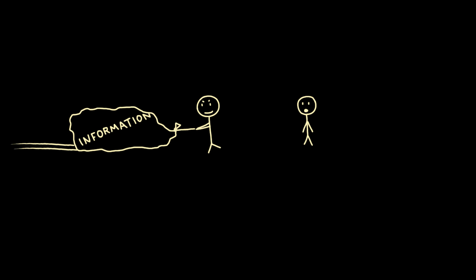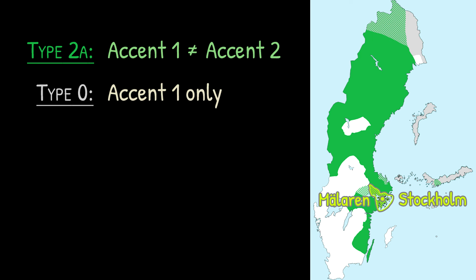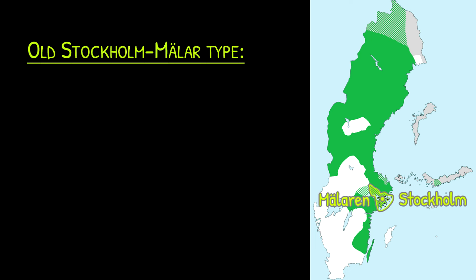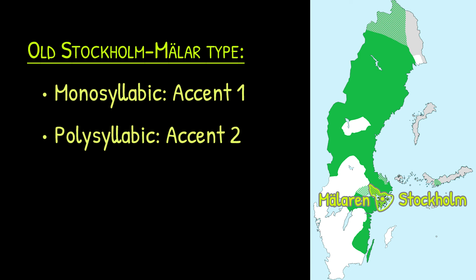First of all, a historical curiosity. Here's the area for type 2a, where Accent 1 and 2 are kept distinct and contrast with each other. But in this region around Lake Mälaren and Stockholm, the traditional dialects did something funky and got rid of the pitch accent contrast altogether. But unlike the type 0 dialects, which simply ditched Accent 2 and kept the more natural Accent 1 on every word, these dialects did kind of the opposite — they kept Accent 1 in monosyllabic words and then generalized Accent 2 onto everything else, which makes for a somewhat peculiar sound to everyone else.